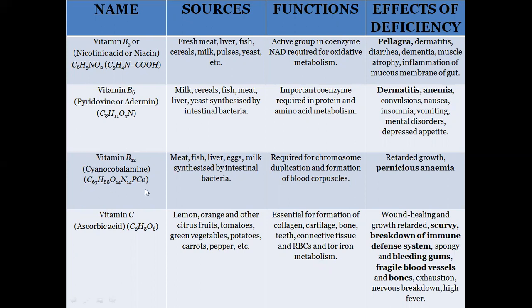Vitamin B12, cyanocobalamin, is sourced from fish, milk, and eggs. Its function is that it is required for chromosome duplication and formation of red blood cells. Its deficiency causes pernicious anemia and also retards growth.